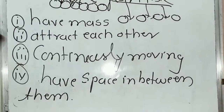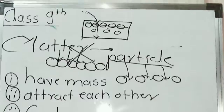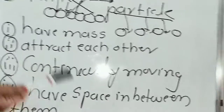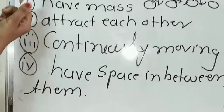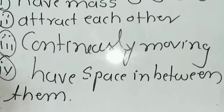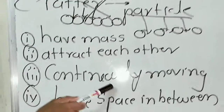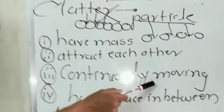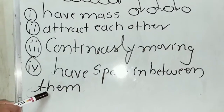Now, everyone understands the characteristics of the particle. The first characteristic: particles have mass. The definition of matter says matter has mass, and obviously these particles also have mass. These particles always attract each other. These particles are continuously moving. These particles have space in between them.